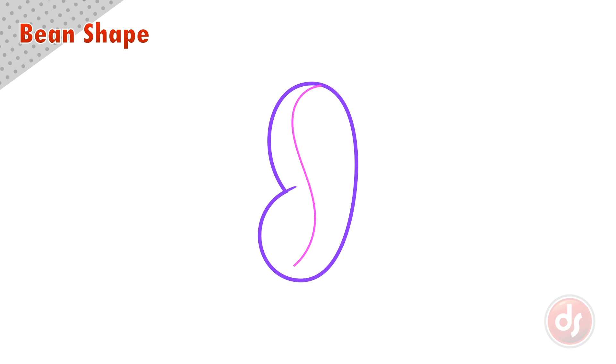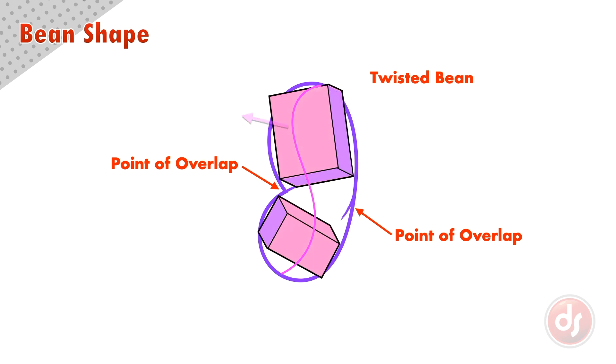The bean and the center line can even help with getting twisting poses. With a twisted bean there are two points of overlap as the ribcage and pelvis twist to face in different directions. Making the center line twist helps us construct the forms inside and ensure they are in different positions.